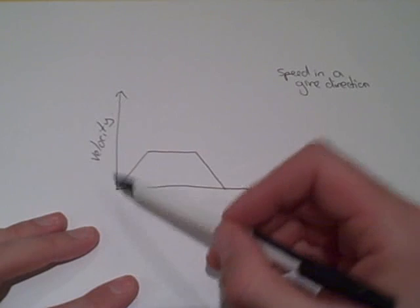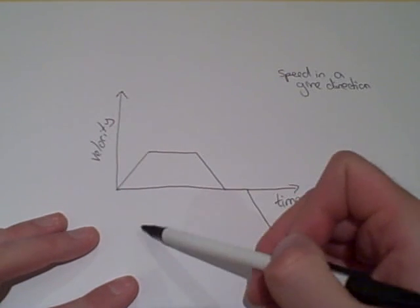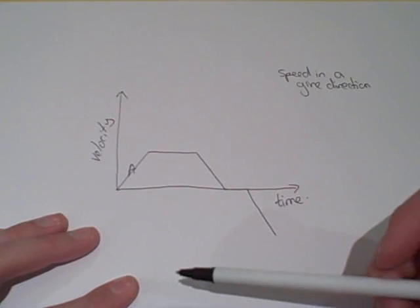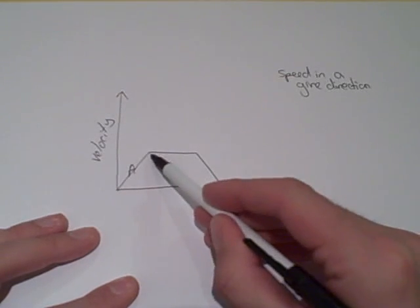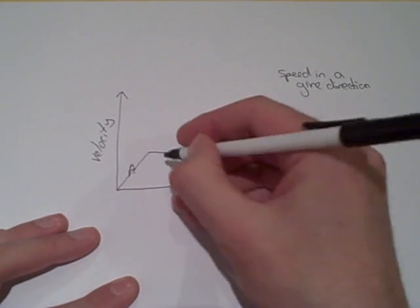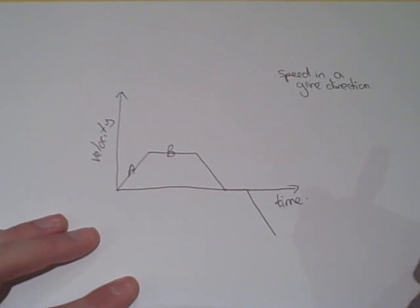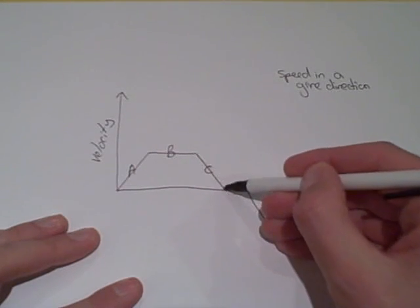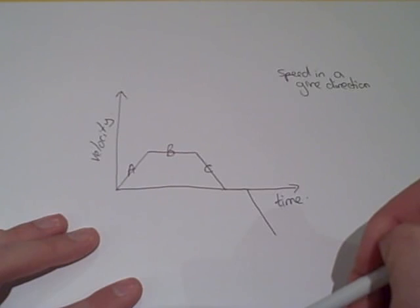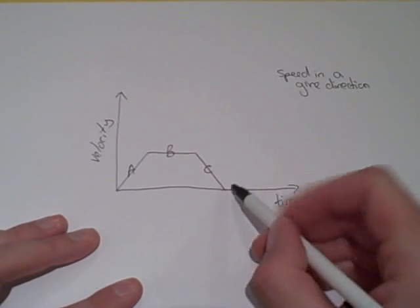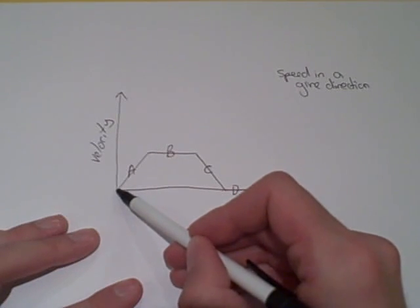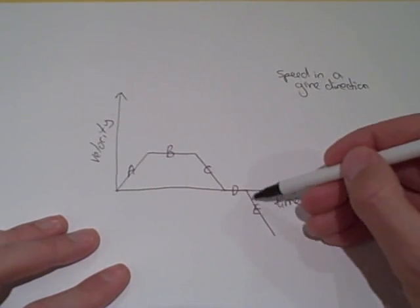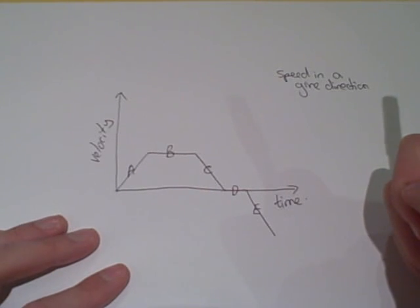In section A, as time passes, the velocity or speed increases, so we say it is accelerating. Section B shows constant speed. In section C, as time passes, velocity is decreasing, so it's decelerating or slowing down. In section D, velocity is zero, meaning it's stationary. In section E, velocity is now negative, showing it's going in the opposite direction and getting faster in magnitude.